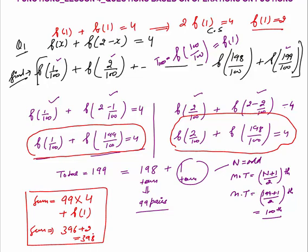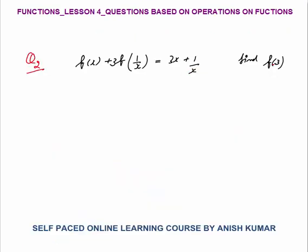The answer is 398. This is a medium difficulty question — it is not easy, but there is no specific concept required; you only apply common sense. The second question: f(x) + 3·f(1/x) = 3x + 1/x. You need to find f(3). Rather than trial and error, you first eliminate one of the variables: f(x) or f(1/x).